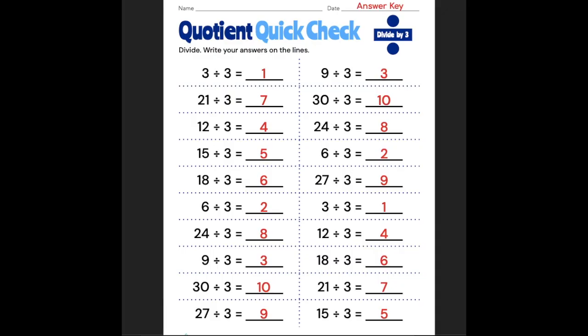6 divided by 3 is 2. 24 divided by 3 is 8. 9 divided by 3 is 3. 30 divided by 3 is 10. And 27 divided by 3 is 9. And it's just mixed up on the right side.